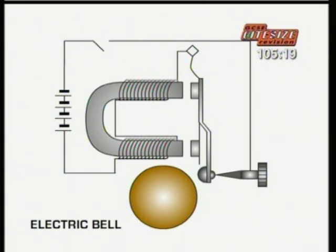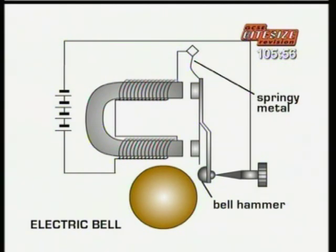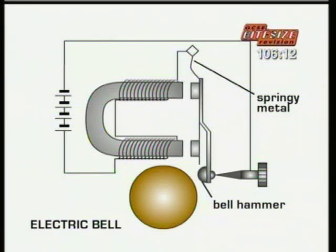Here's a circuit diagram of an electric bell. When the current flows in the circuit, it passes through the coil of an electromagnet. The bell hammer is attached to a piece of springy metal, which is part of the circuit. When the current is switched on, it flows in the wire coil — that creates a magnetic force which attracts the bell hammer and clangs the bell. It also breaks the circuit, which turns off the electromagnet and releases the hammer so it springs back into its original position. That turns the current on again, which turns on the electromagnet, and so on, very quickly.